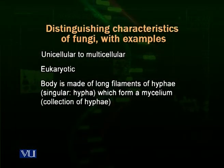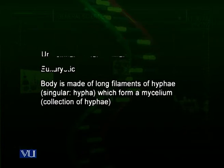Fungi may be microscopic unicellular or macroscopic multicellular organisms. The body of fungi is made up of filamentous material. Except for unicellular fungi like yeast, the body of most fungi consists of long tubular filaments which are sometimes septate — meaning they have septa or divisions — and sometimes non-septate, meaning no divisions. Sometimes they are uninucleated, having a single nucleus, and sometimes multinucleated, having more than one nucleus.